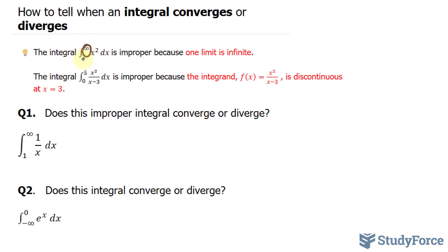Take a look. Another scenario when an integral is improper is the following. Take the function x to the power of 2 over x minus 3 between 0 and 5 with respect to x. The denominator here cannot be 0, and the only time it will be 0 is when x is equal to 3. x being equal to 3 is between the two bounds, 0 and 5.